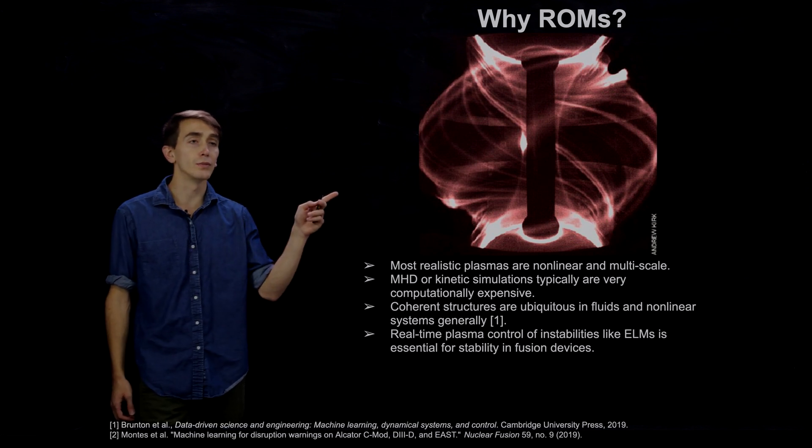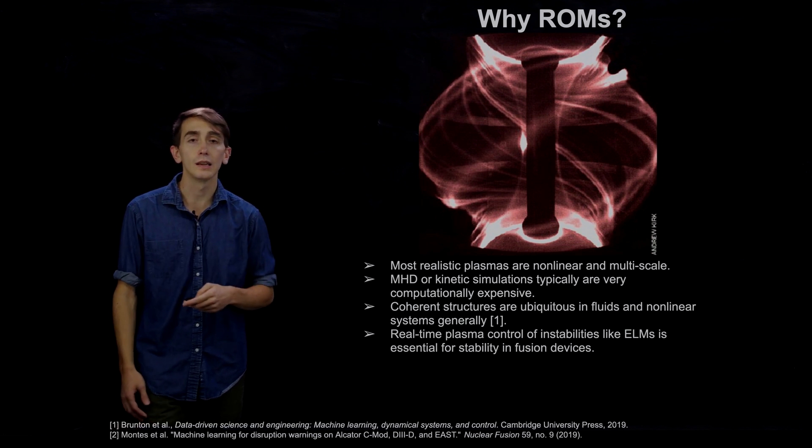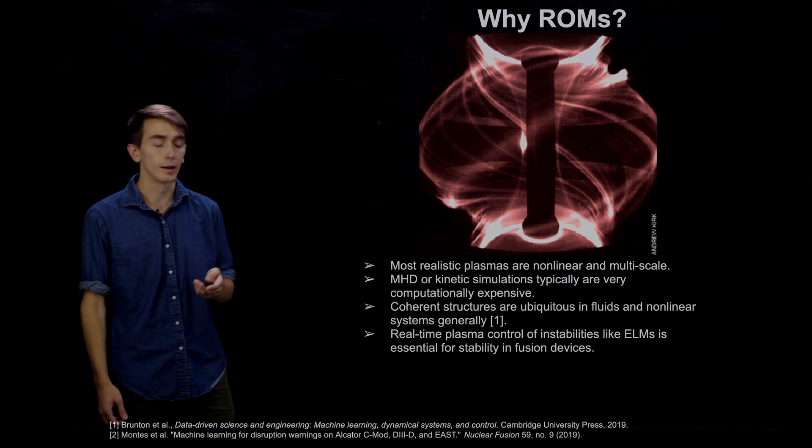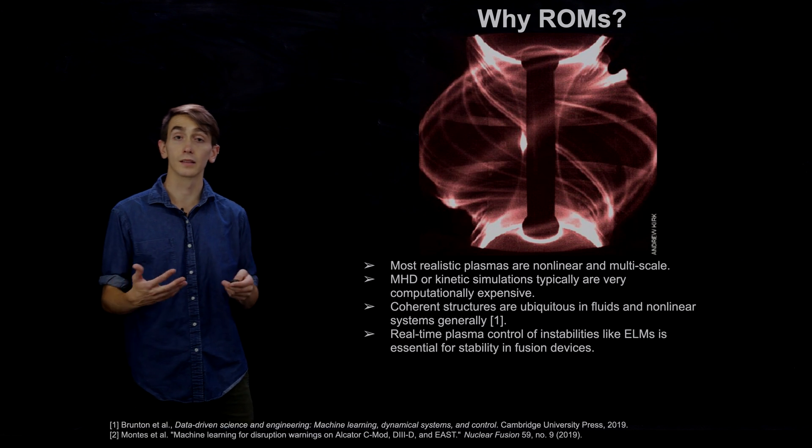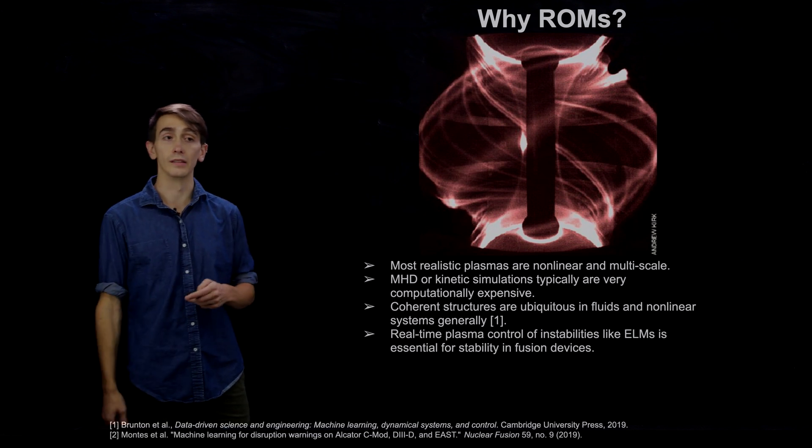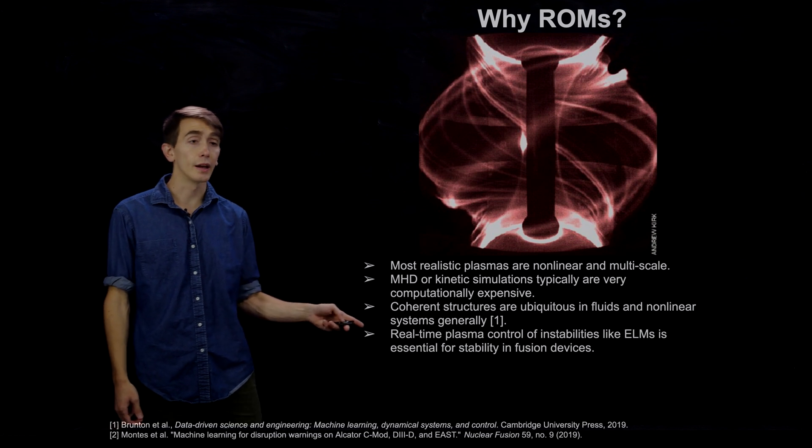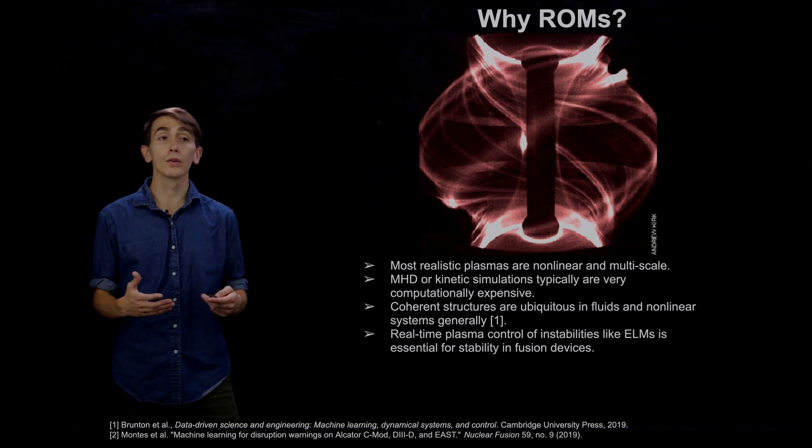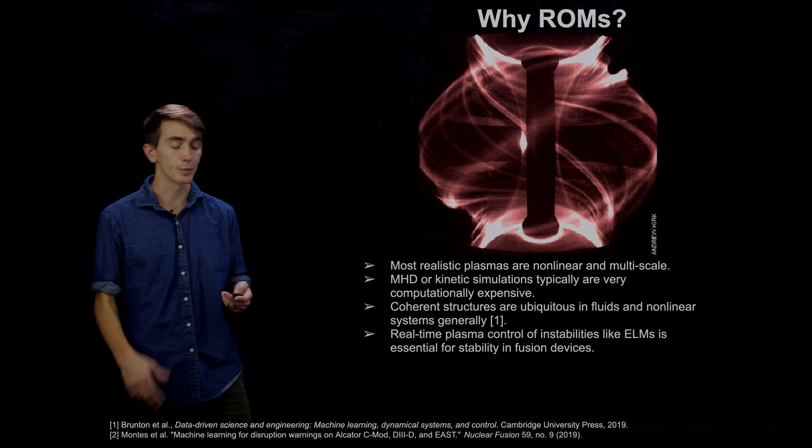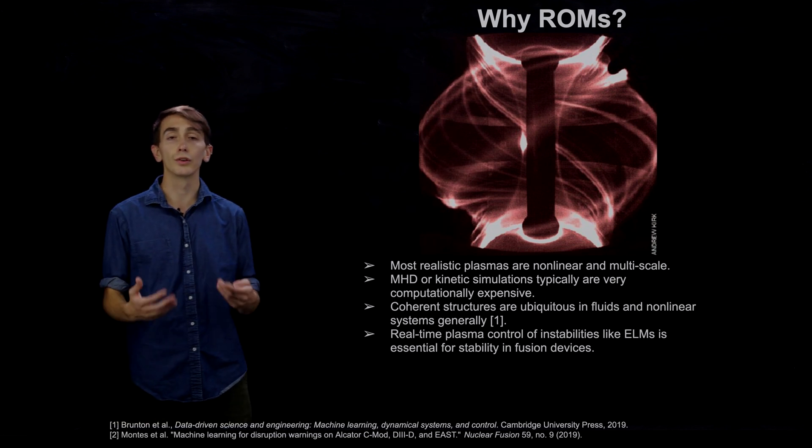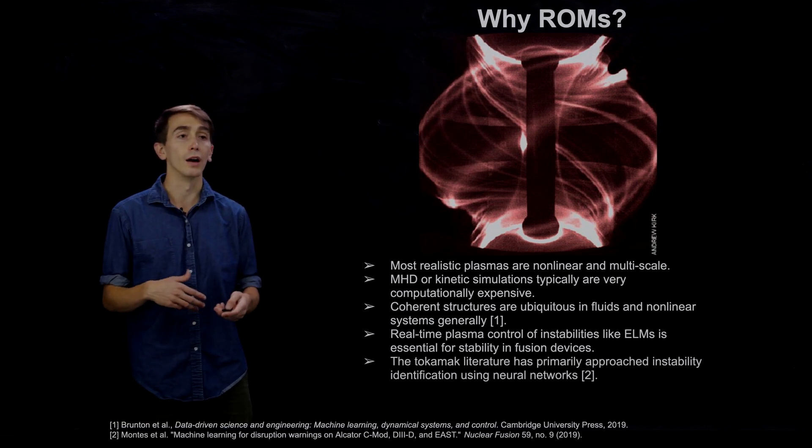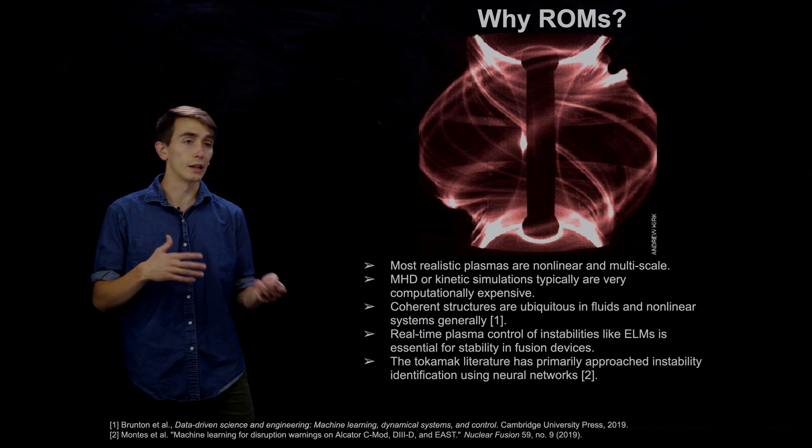And you can see from the emission here, it's got this complicated 3D helical structure, and ideally we'd like to be able to forecast, understand, and control these things. But the key word here is real-time, meaning that we need models which are not so computationally expensive, and so we need to search for reduced order models.